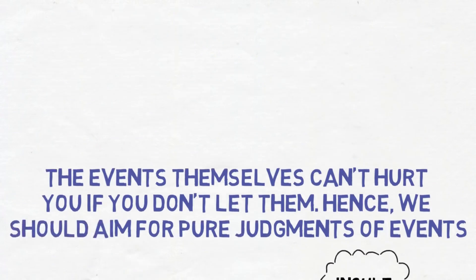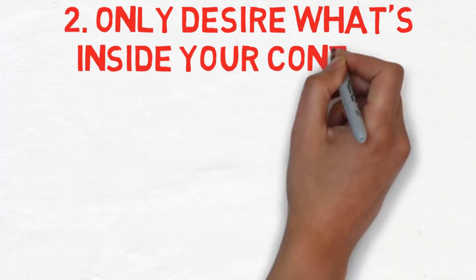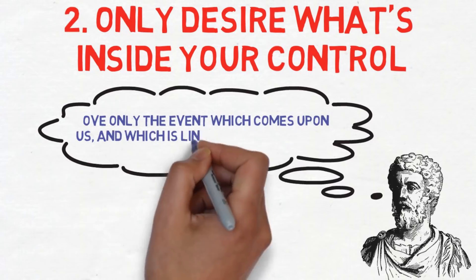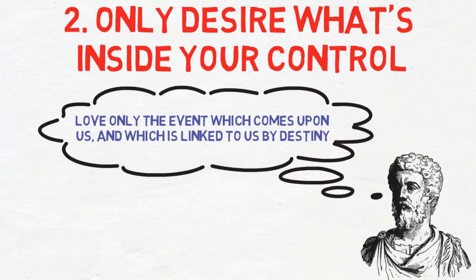Rule 2: Only desire what's inside your control. In the seventh book of his meditations, Aurelius writes: Love only the event which comes upon us and which is linked to us by destiny.